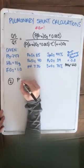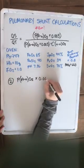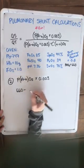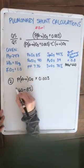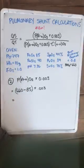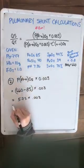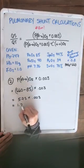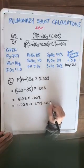Which is our AA gradient times 0.003. So our AA gradient is going to be 660 minus our P little a O2, which is given, 85, times our 0.003. So 660 minus 85 is 575 times 0.003. That gives us 1.725, which can further be reduced to 1.73, just to make it a little simpler, volume percent.